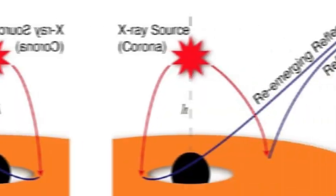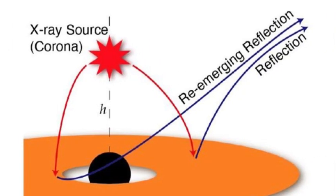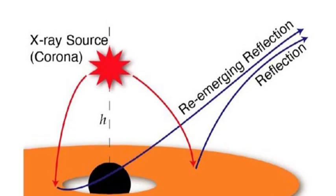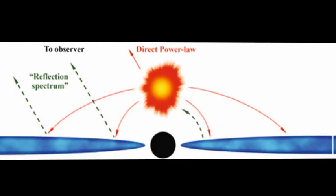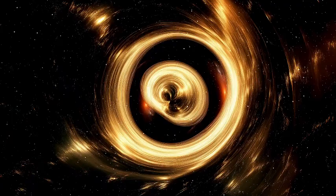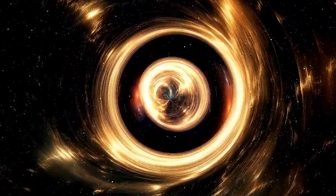Future upgrades to the EHT may even detect this photon ring, giving us a sharper view of the edge itself. There's also X-ray reverberation mapping, a cutting-edge technique that measures echoes of X-rays bouncing around near the black hole. These echoes reveal the geometry of the inner accretion disk and even give clues about the black hole's spin, the cosmic fingerprint of how it was formed and fed over billions of years.